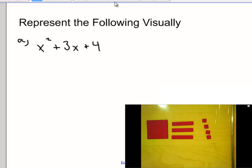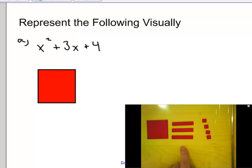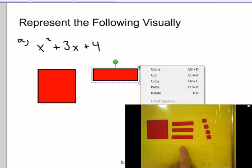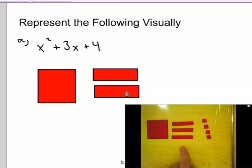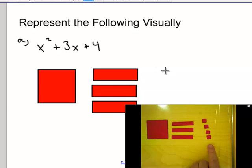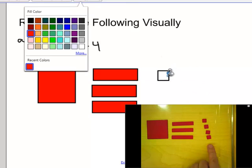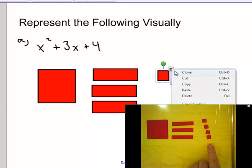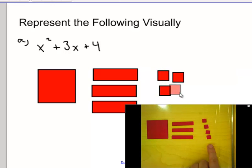And you could represent that in your notes by drawing one x squared tile and shading it appropriately. Three x tiles, again shading it appropriately. And then four individual units. So we've represented the algebraic expression x squared plus 3x plus 4 using algebra tiles.